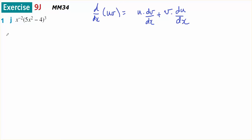This is for U12 methods. It comes out of 9J. It's 1J, the product rule.